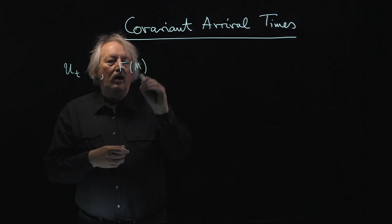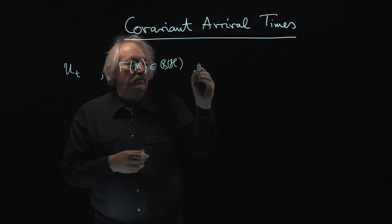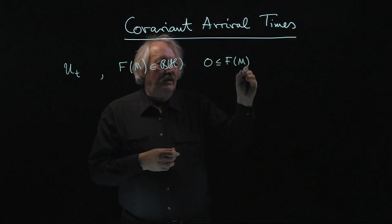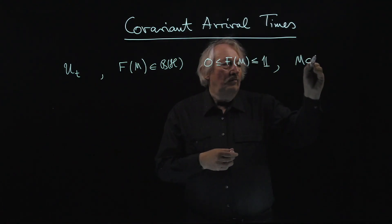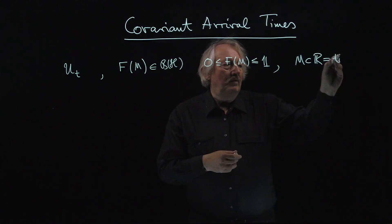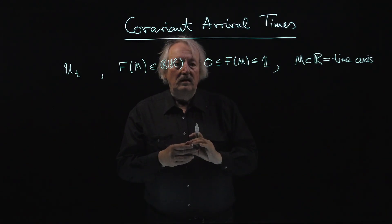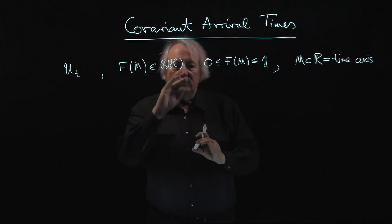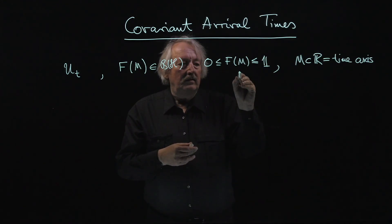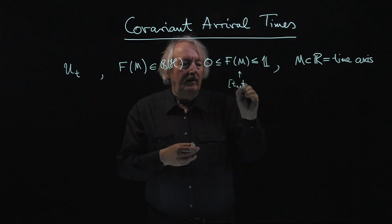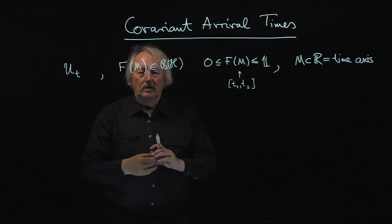F of m would be a bounded operator on the system Hilbert space, between 0 and 1 — that's why it's a positive operator-valued measure. In the argument, m would be a subset of ℝ, which we interpret as a time axis. The expectation value of this operator in some state is interpreted as the probability to register that a detector clicks during the set of times given by m. If m is just a time interval, you can add up these operators — that's the operator property.